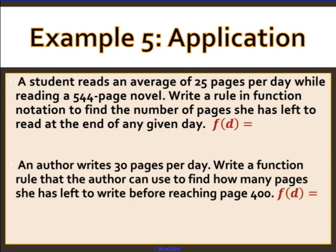A student reads an average of 25 pages per day while reading a 544-page novel. Write a rule in function notation to find the number of pages she has left at the end of any given day. The function of d equals 544 − 25d, where d is the number of days she has read and we subtract 25 pages per day from 544.